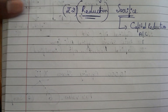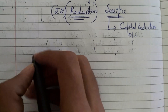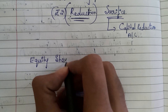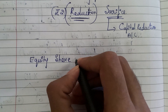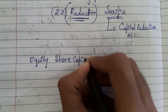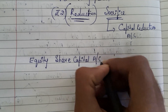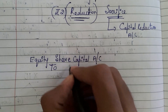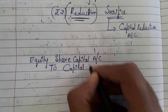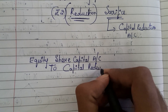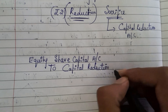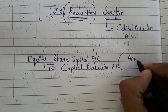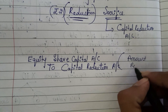So the journal entry is very simple for this. It is: Equity Share Capital Account debited — if it is preference shares then preference share capital — to Capital Reduction Account. We write the amount that has been reduced, i.e., the sacrifice amount.